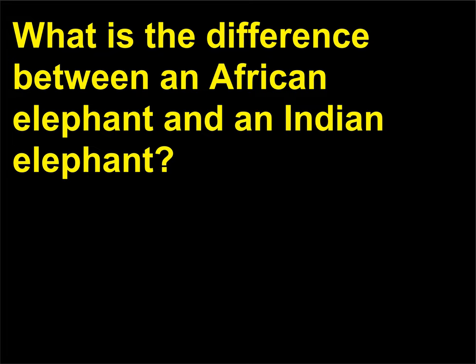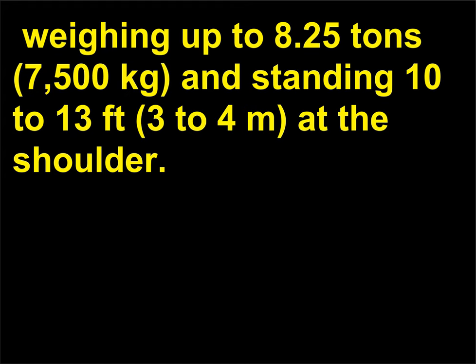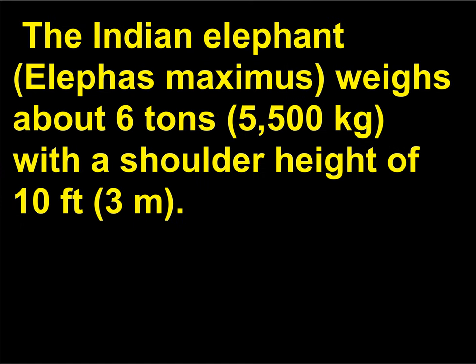What is the difference between an African elephant and an Indian elephant? The African elephant, Loxodonta africana, is the largest living land animal, weighing up to 8.25 tons (7,500 kg) and standing 10 to 13 feet (3 to 4 m) at the shoulder. The Indian elephant, Elephas maximus, weighs about 6 tons (5,500 kg) with a shoulder height of 10 feet (3 meters).